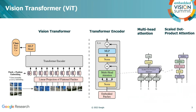Self-attention plays a core concept in transformer architectures because it allows any token to communicate with every other token to achieve global communication. This is what makes the transformer design fundamentally different from how convolutional networks work.